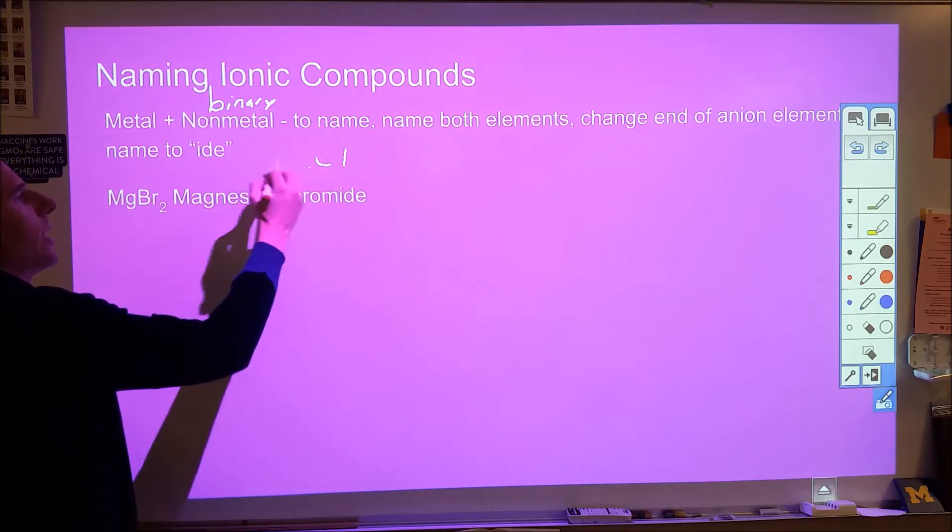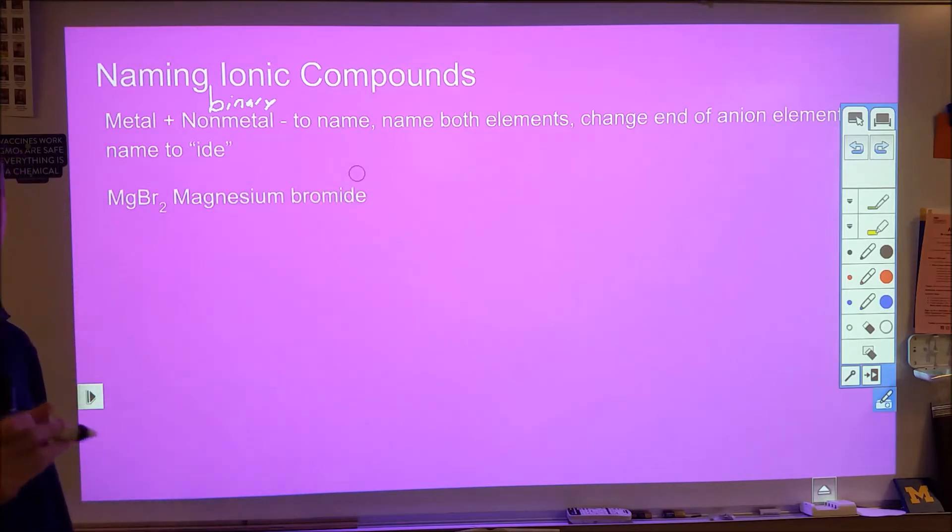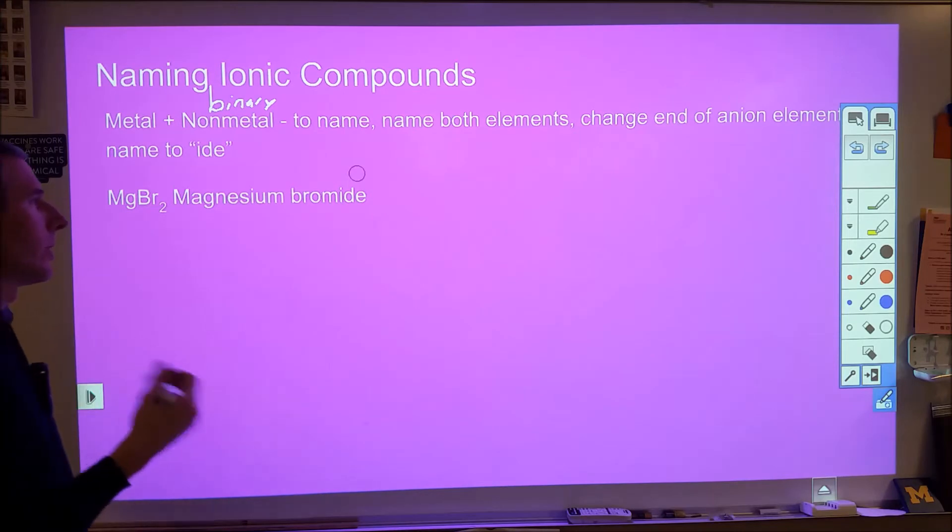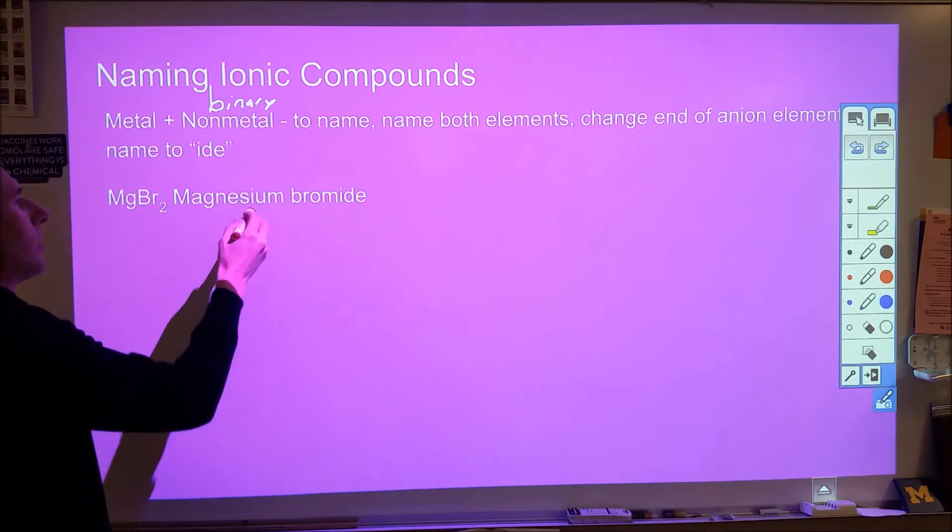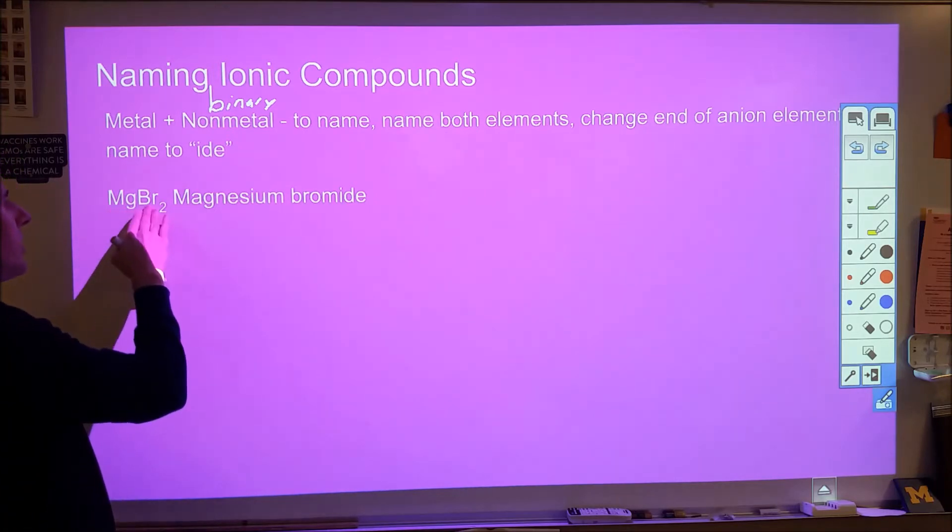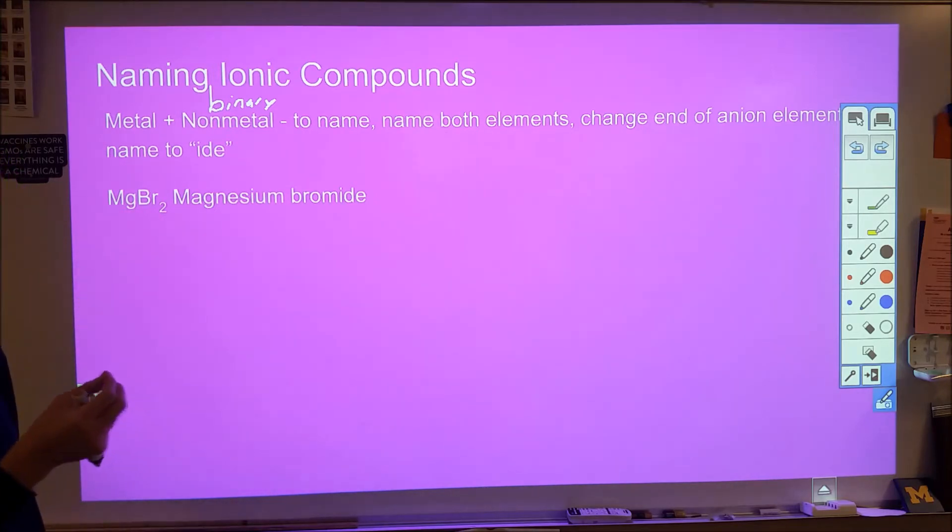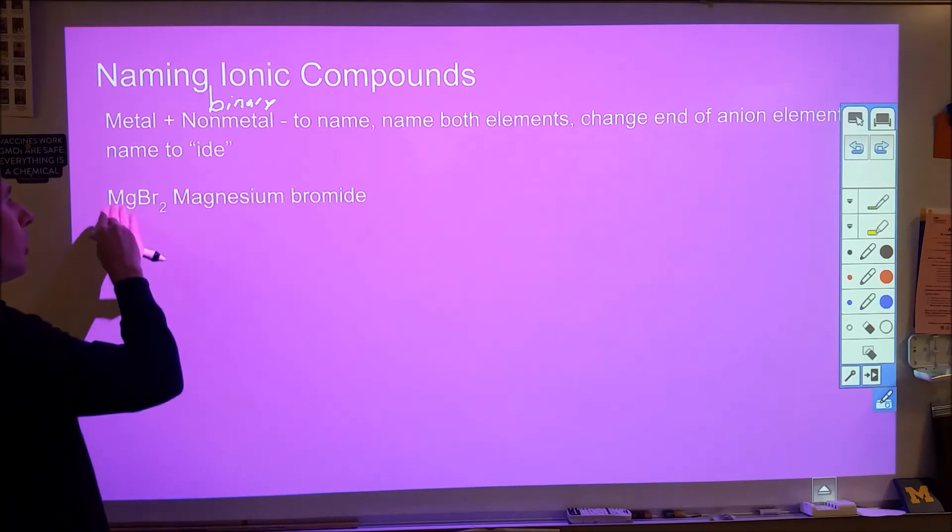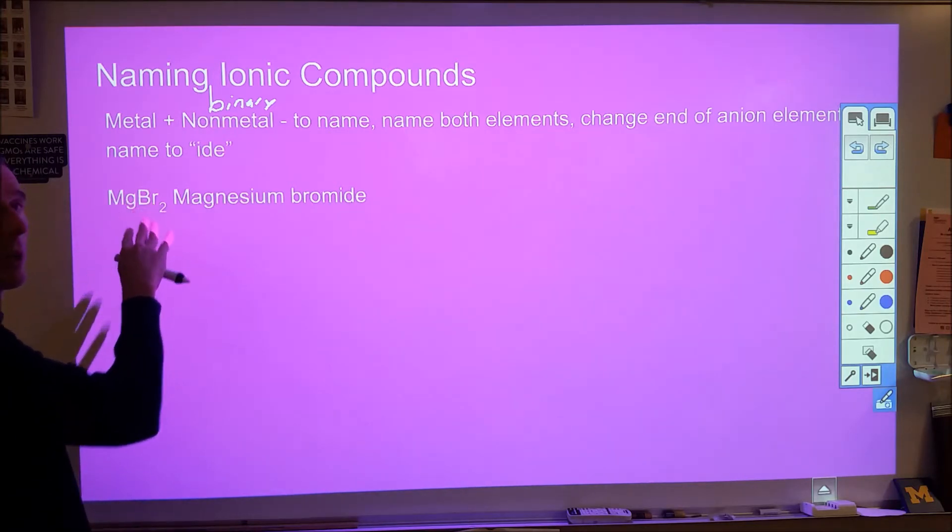Now one of the themes here for naming is this. You're trying to communicate the minimal possible amount of information as efficiently as possible. So it turns out that for these binary compounds, there's only one formula. So when you pair up magnesium and bromine into a compound form, the only formula will ever form is magnesium bromide, MgBr2.